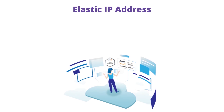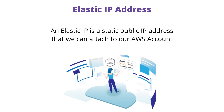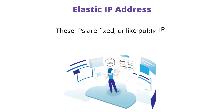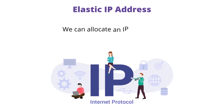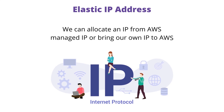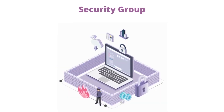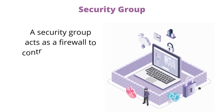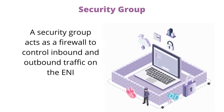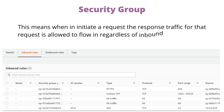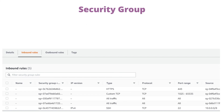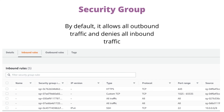Elastic IP Address: an elastic IP address is a static public IP address that we can attach to our AWS account. These IPs are fixed, unlike public IPs which change on instance termination. We can allocate an IP from AWS-managed IP pools or bring our own IP to AWS. Security group: a security group acts as a firewall to control inbound and outbound traffic on the ENI. Security groups are stateful — when a request is initiated, the response traffic is allowed to flow in regardless of inbound rules, and vice versa. By default, it allows all outbound traffic and denies all inbound traffic.